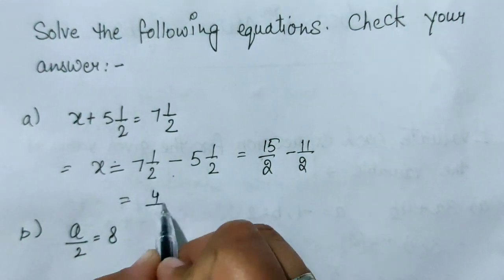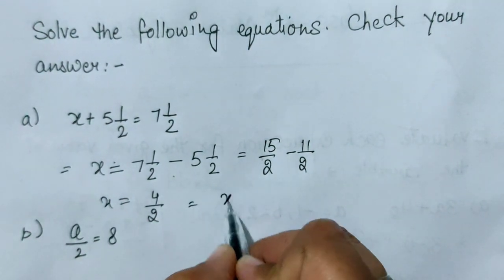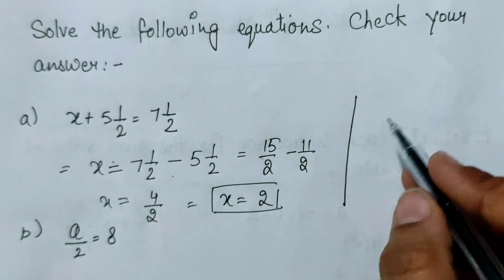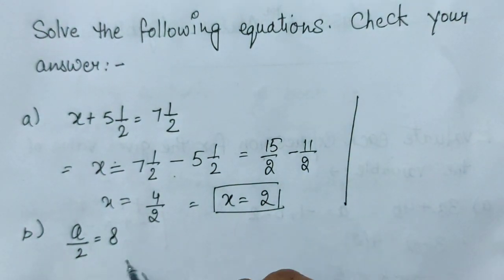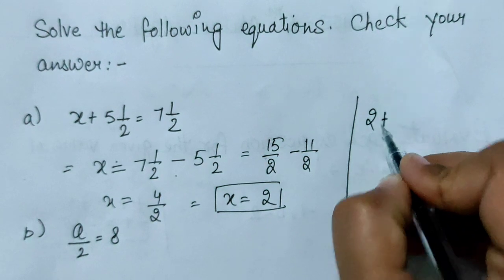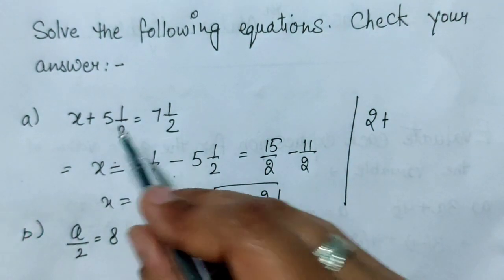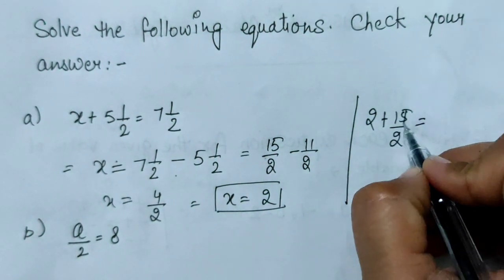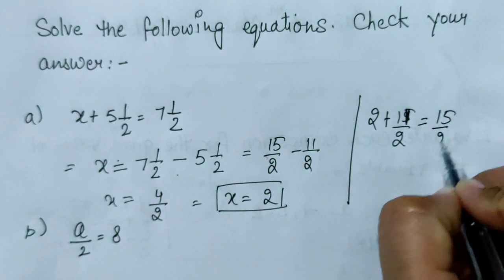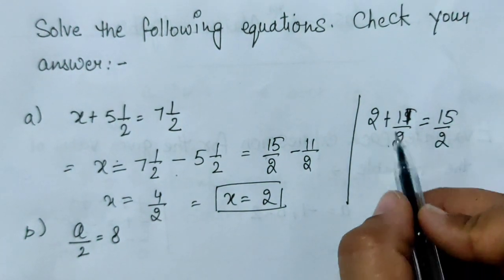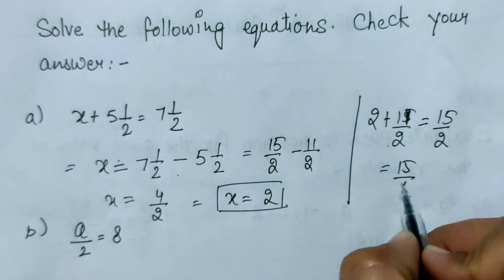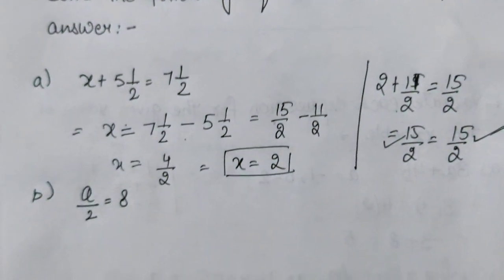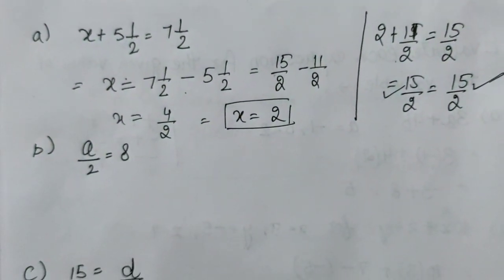Denominator same है तो direct लिख सकते हैं: 4 by 2। X की value आ जाएगी 2। Answer check करने के लिए equation में X की value 2 put करेंगे। यहाँ पर 15 by 2 और यहाँ पर 11 by 2, LCM लेने के बाद 15 by 2 equal to 15 by 2। दोनों side equal है — इसका मतलब answer बिल्कुल सही है।